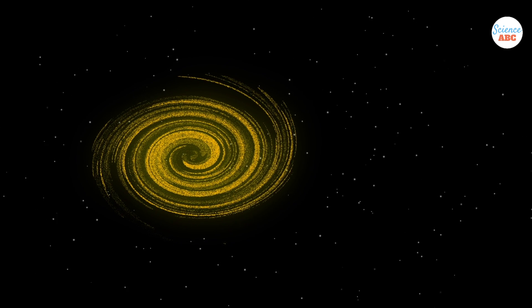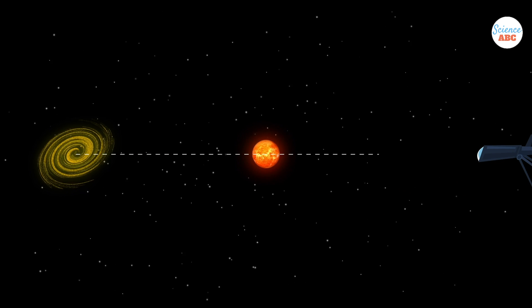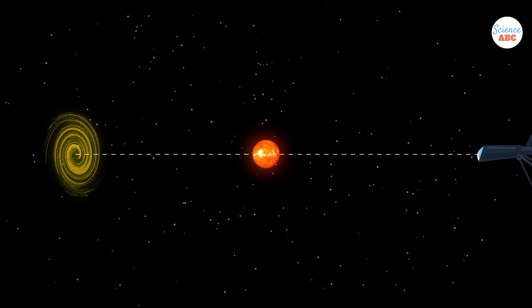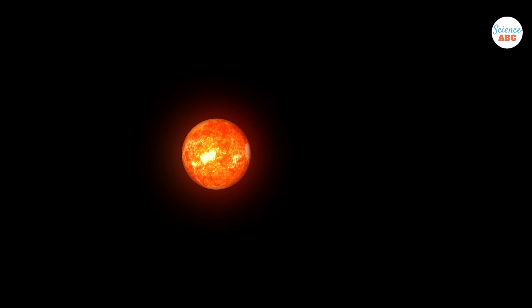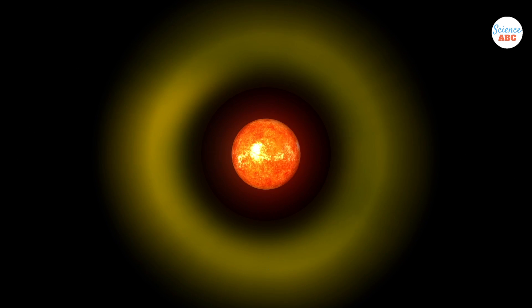Now, if the source, lens, and observer are perfectly aligned, and the lens and source are spherically symmetric, we will see a beautiful phenomenon called the Einstein ring.